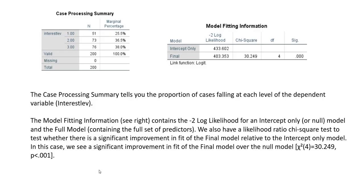So now let's look at our output in a little more detail. The model fitting information contains the negative 2 log likelihoods from an intercept-only model and the full model, which contains the full set of predictors. We also have a likelihood ratio chi-square test to evaluate whether there's a significant improvement in fit of the final model relative to the intercept-only or null model. In this case, we see a significant improvement in fit, indicating that our full model represents a significant improvement over the null.